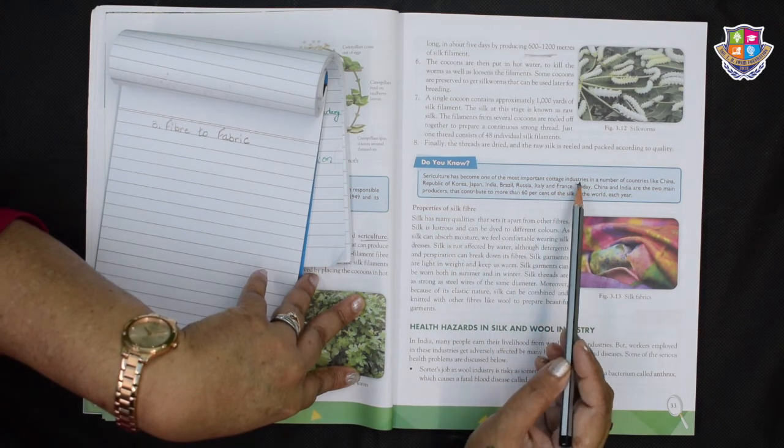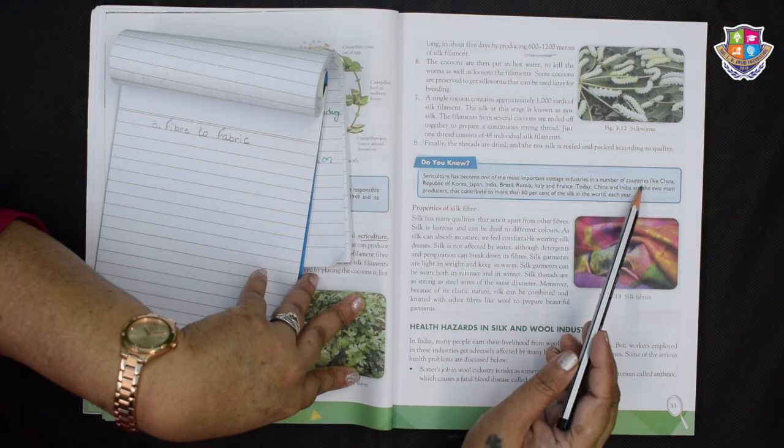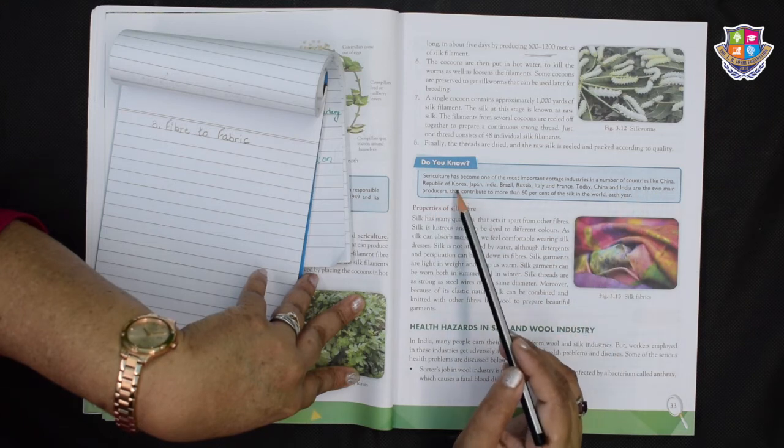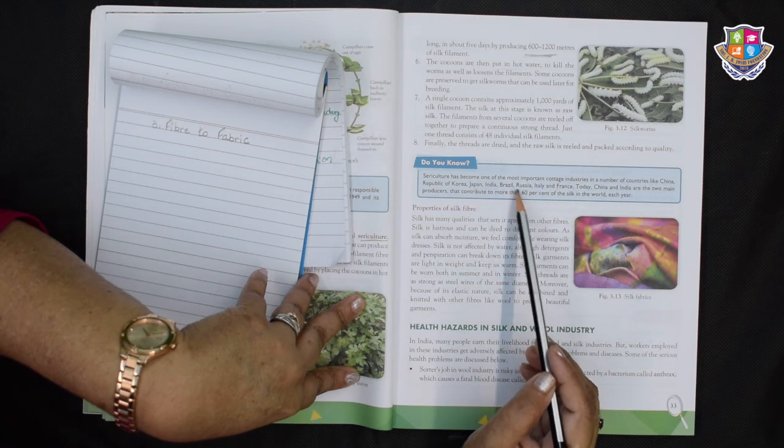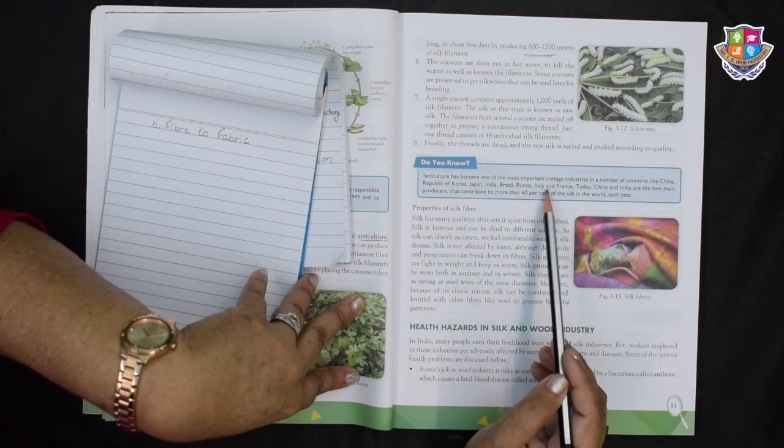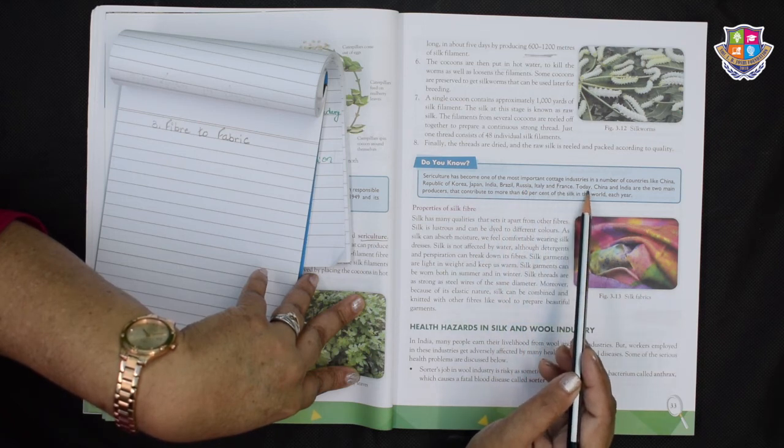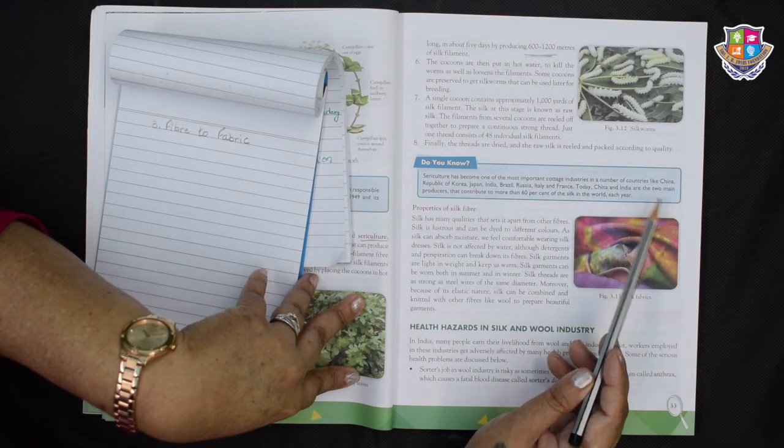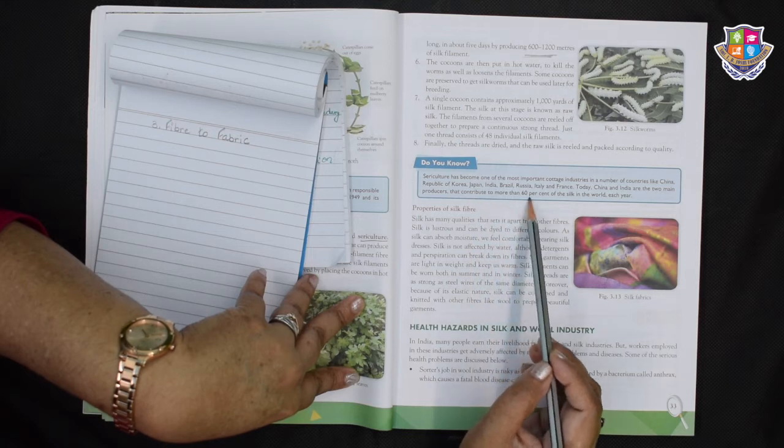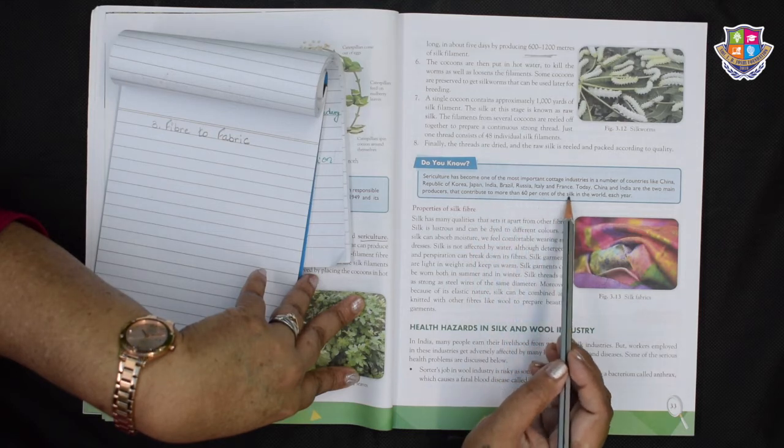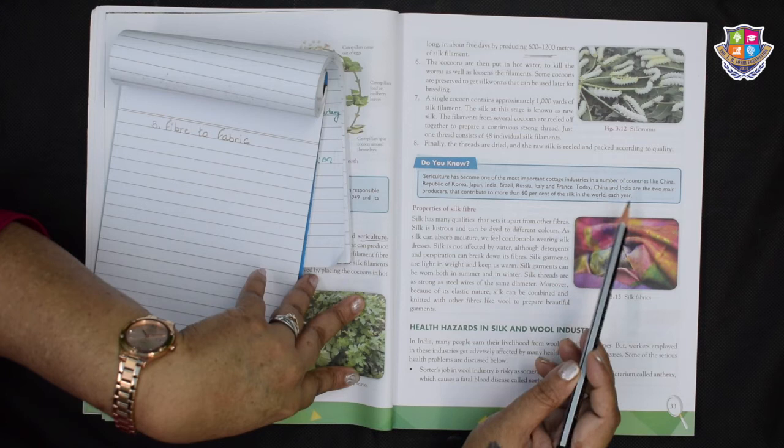Now let's see what the do you know has in store for us. Sericulture has become one of the most important cottage industries in a number of countries like China, Republic of Korea, Japan, India, Brazil, Russia, Italy and France. Today, China and India are the two main producers that contribute to more than 60% of the silk in the world each year.